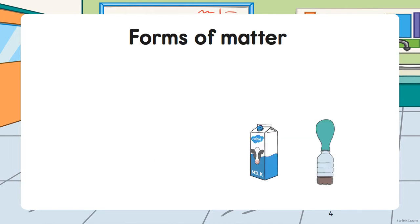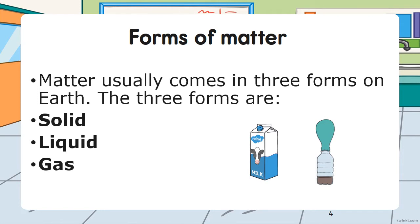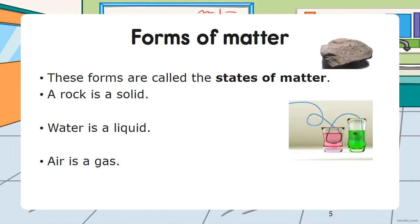Matter usually comes in three forms on Earth. The three forms are solid, liquid, and gas. These forms are called states of matter. A rock is a solid, water is a liquid, and air is a gas.